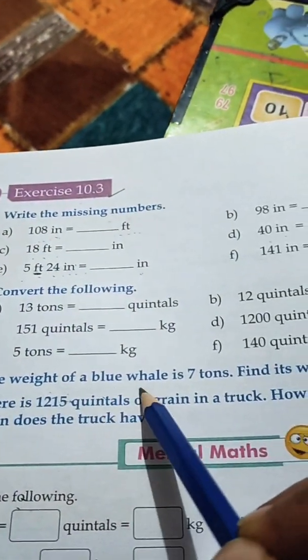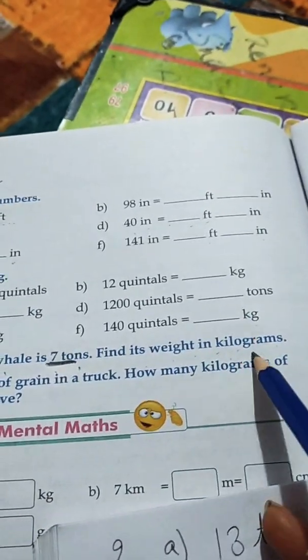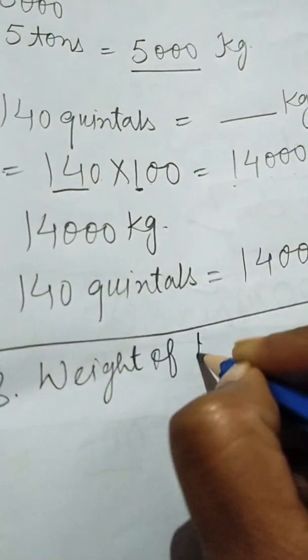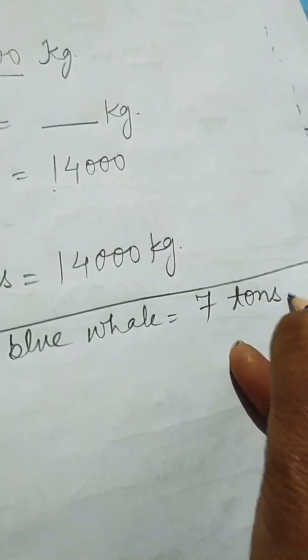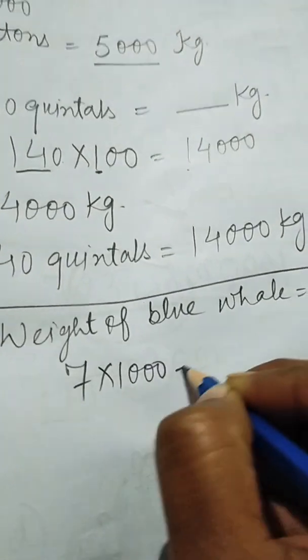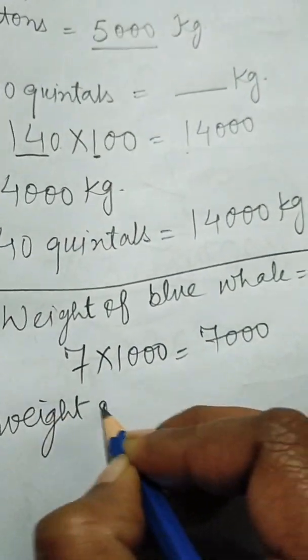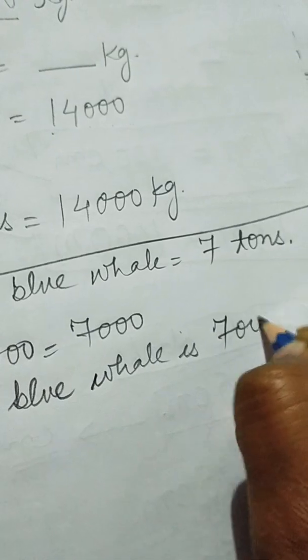Sum number 3: The weight of a blue whale is 7 tons — find its weight in kilograms. Weight of blue whale is 7 tons. To convert tons into kilograms, we multiply tons by 1000. So 7 multiplied by 1000 gives 7000. Therefore, the weight of the blue whale is 7000 kilograms.